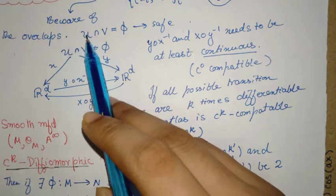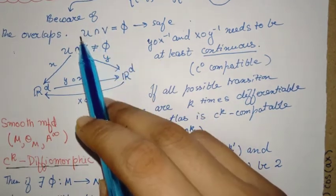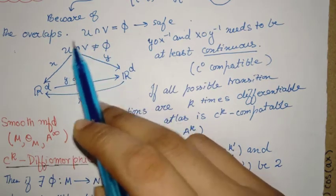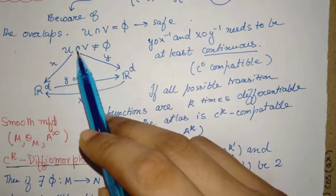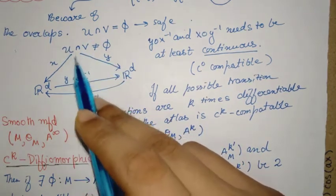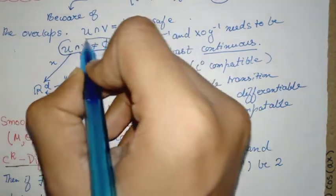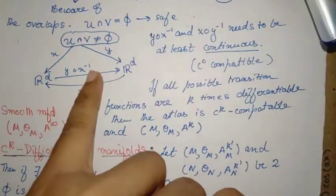So similarly there can be overlaps between charts. Suppose you have two charts, U and V, and we both are a part of an open set - they both belong to the topology of M, a manifold. Now you have one chart, you have another chart.